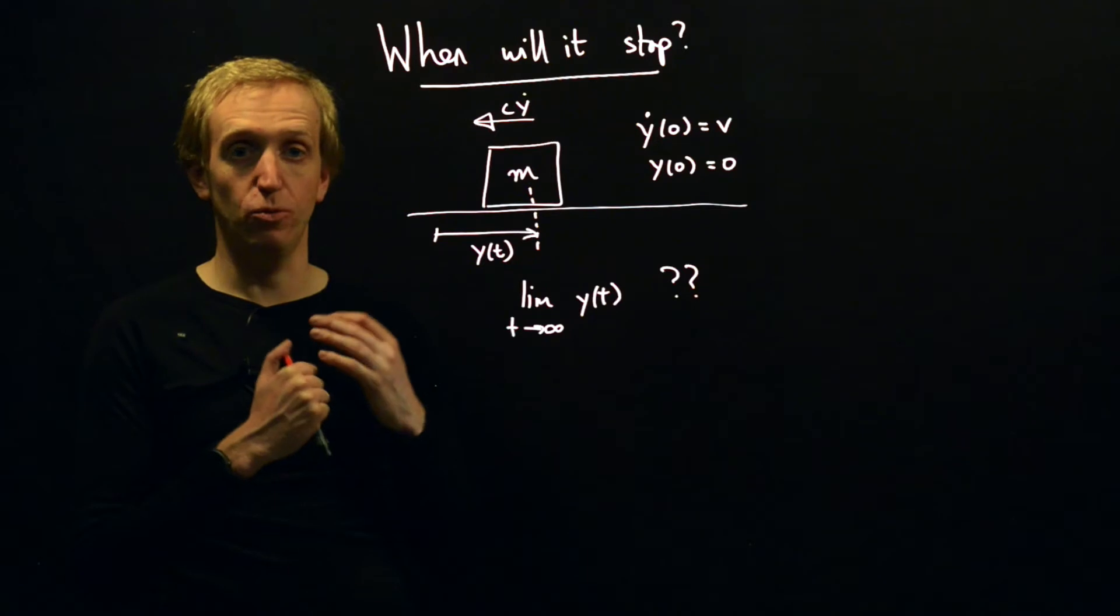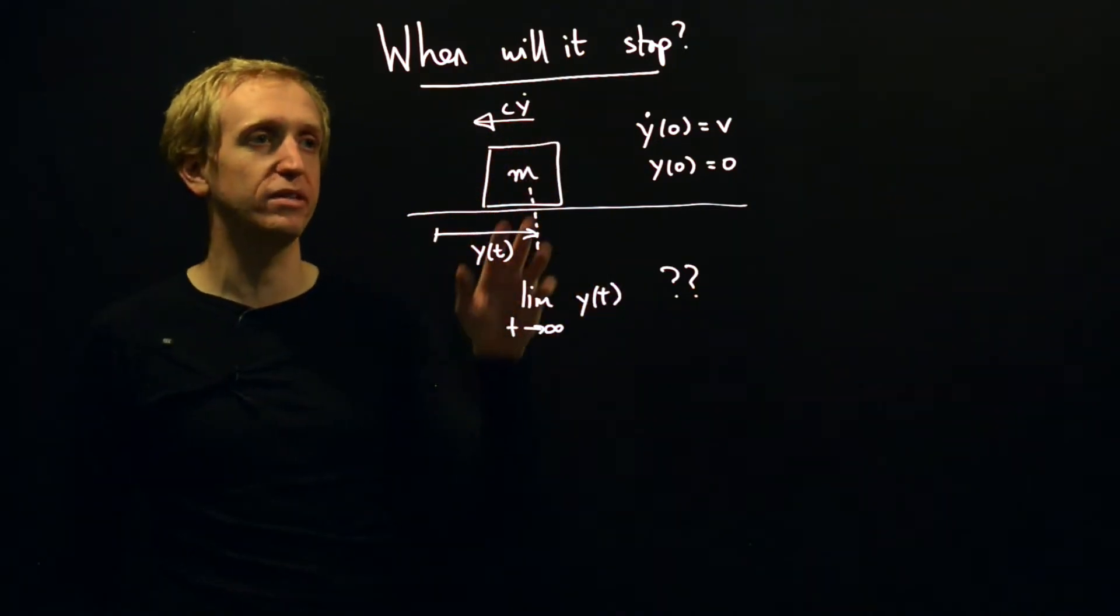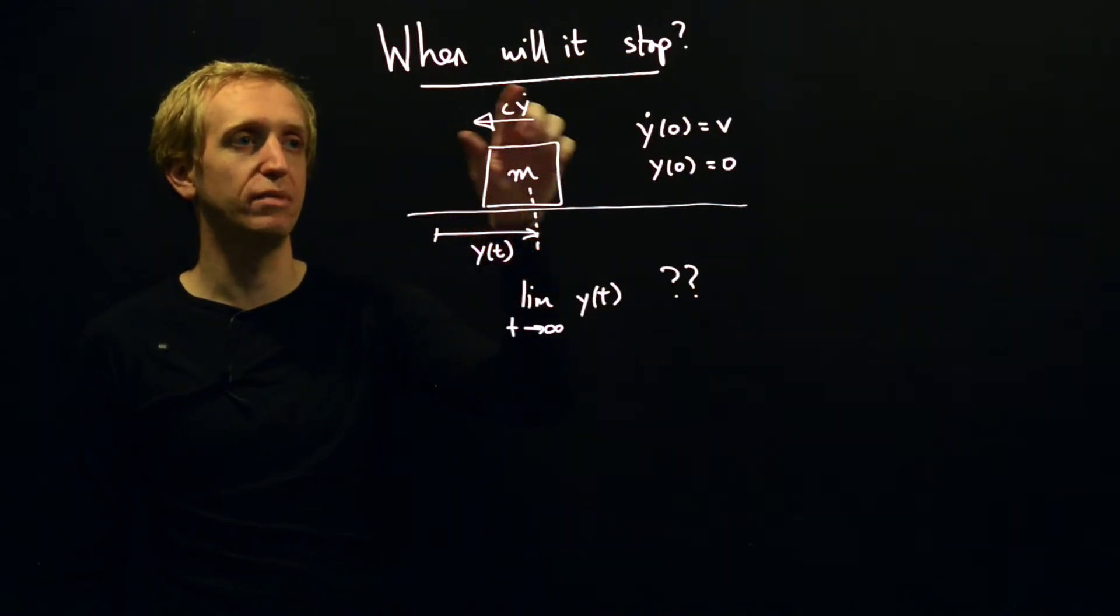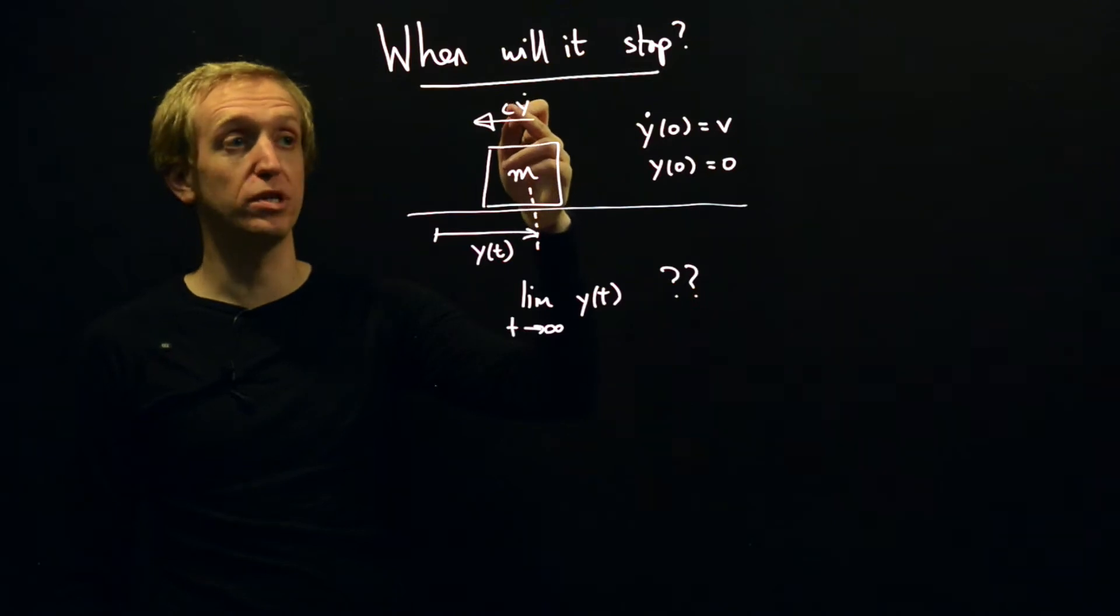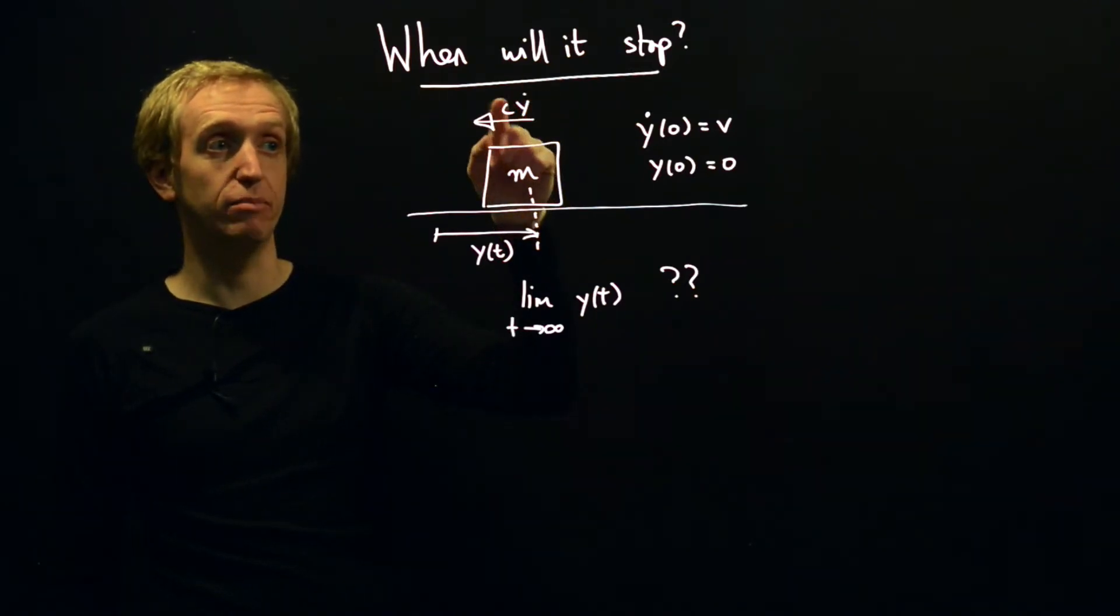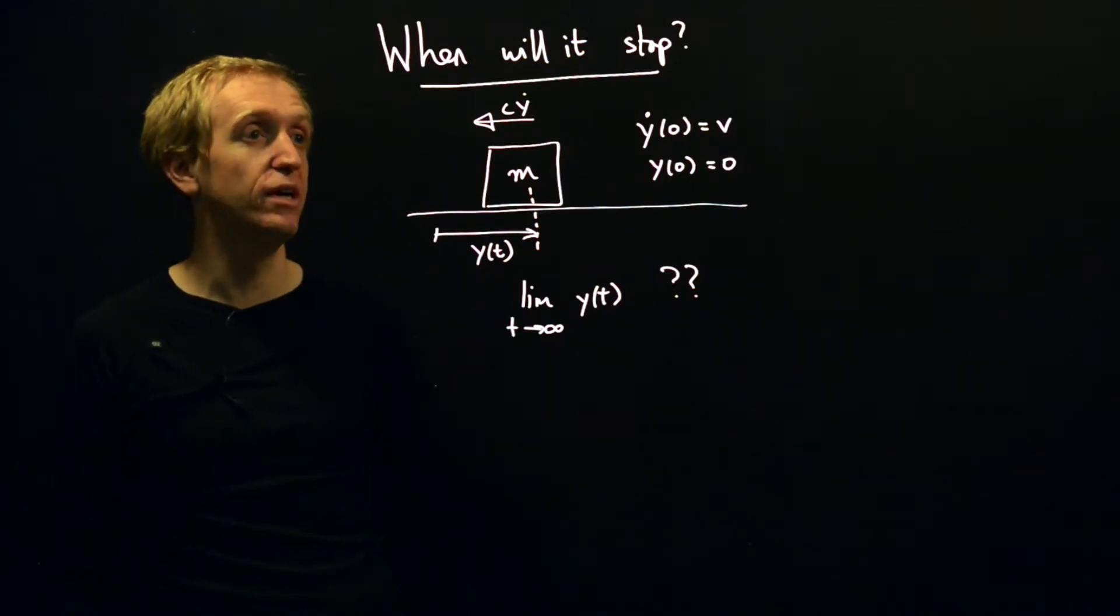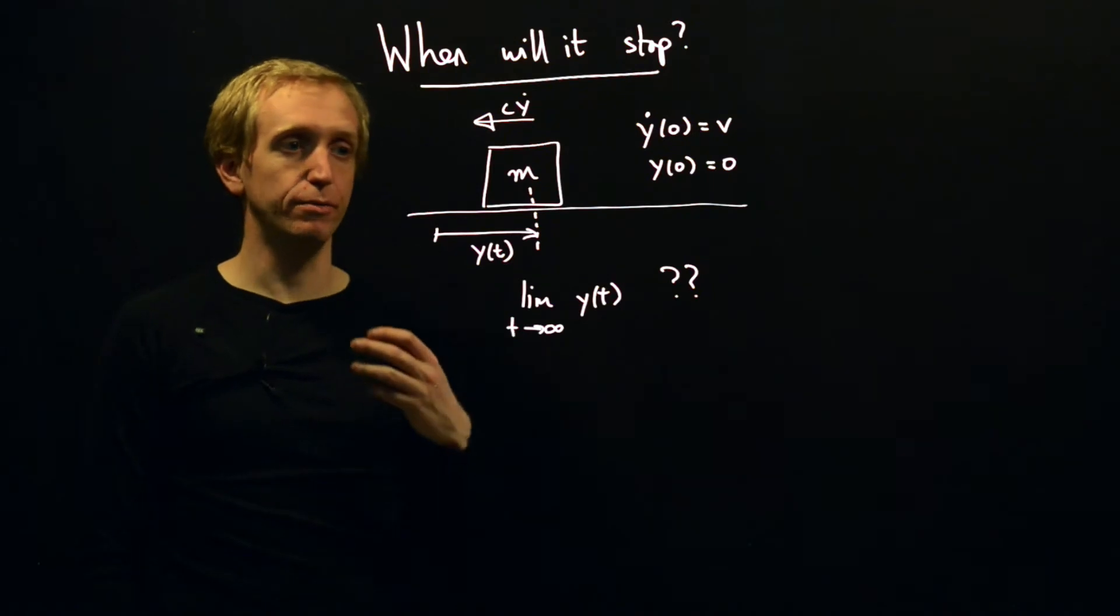And we're braking. And in our simple model of this sliding block or car brake is that it applies a force to the car that's proportional to the velocity, and there's some constant of proportionality c. There's no other forces. So that's the setup.